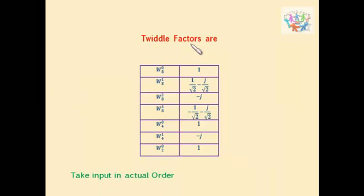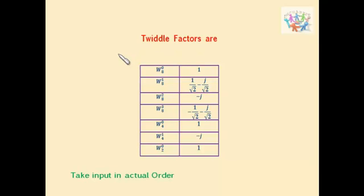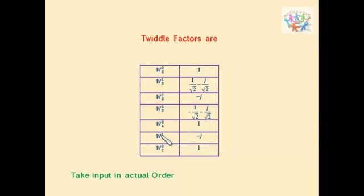Now we need to determine the twiddle factors. The input sequence length is 8, and since 2³ = 8, the power 3 gives us 3 stages. For stage 1, the twiddle factors are W8⁰, W8¹, W8², and W8³. For stage 2, we have W4⁰ and W4¹ with values 1 and −j. For stage 3, we have W2⁰ with value 1.